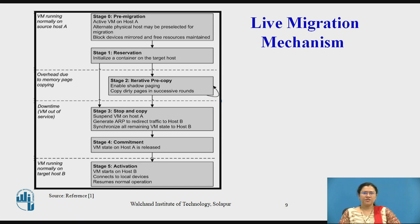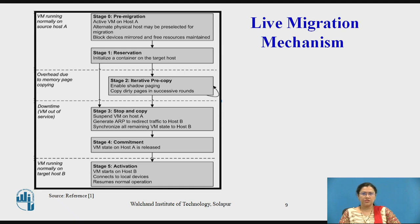Here we have different stages of this migration: Stage 0, 1, 2, 3, 4, and 5. For Stage 0, called the pre-migration stage, an active virtual machine exists on physical host machine A. Then in Stage 1, the reservation stage, a request is issued to migrate an operating system from host A to host B, and initialization of a container on the target host is done.